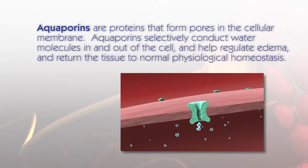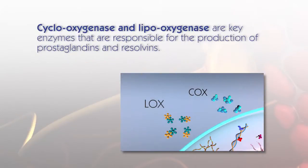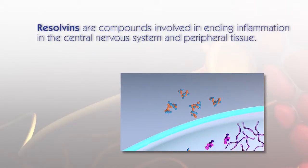Aquaporins are proteins that form pores in the cellular membrane. They selectively conduct water molecules in and out of the cell and help regulate edema, returning tissue to normal physiological homeostasis. Cyclooxygenase and lipoxygenase are key enzymes responsible for the production of prostaglandins and resolvins. Resolvins are compounds involved in ending inflammation in the central nervous system and peripheral tissue.